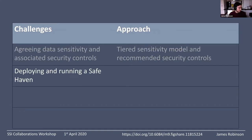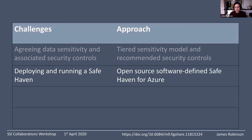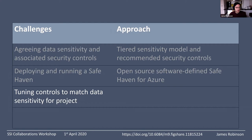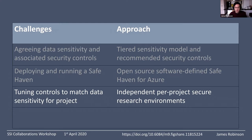The next thing that often comes up is deploying and running some sort of safe haven environment that you can look at sensitive data in. We want to be sure there's security around this environment. The way we try to ensure that is by having an open source implementation of a software-defined safe haven that runs on Azure. The idea is that the code that deploys one of these things could be audited, and anyone is able to deploy one themselves and make changes as necessary. On top of the tiered sensitivity, we're able to tune the controls around the data to match the data sensitivity of the project, adding independent per-project secure research environments where that's necessary.